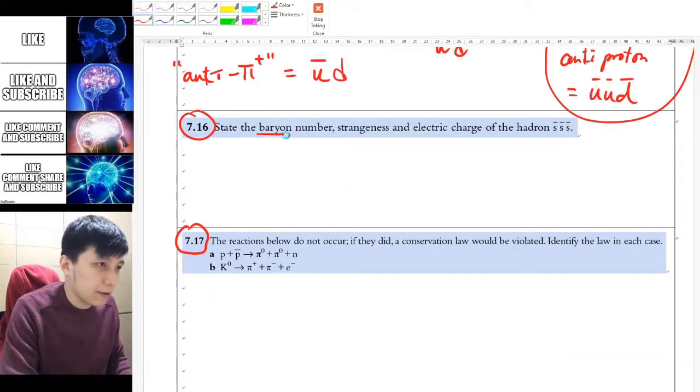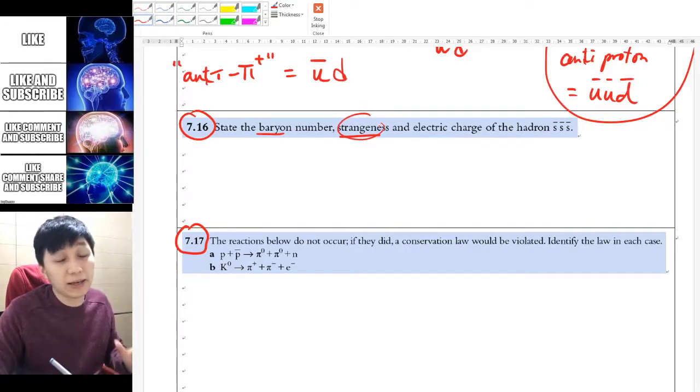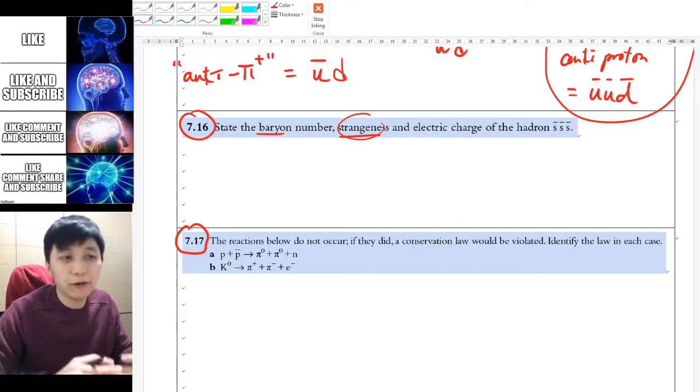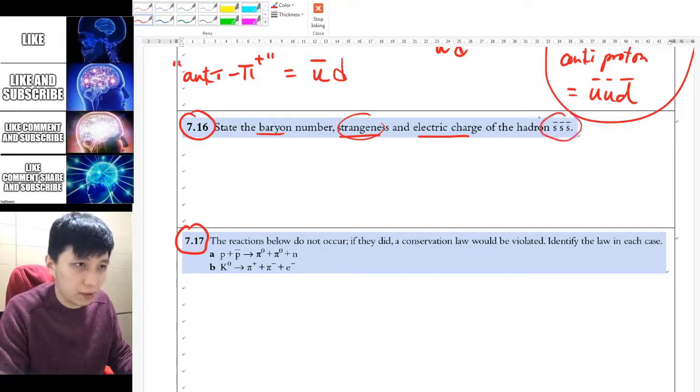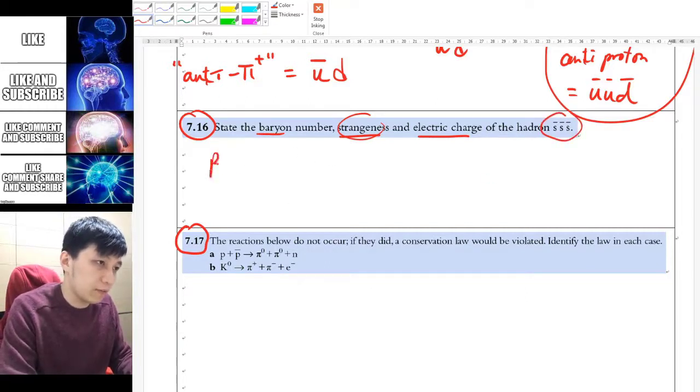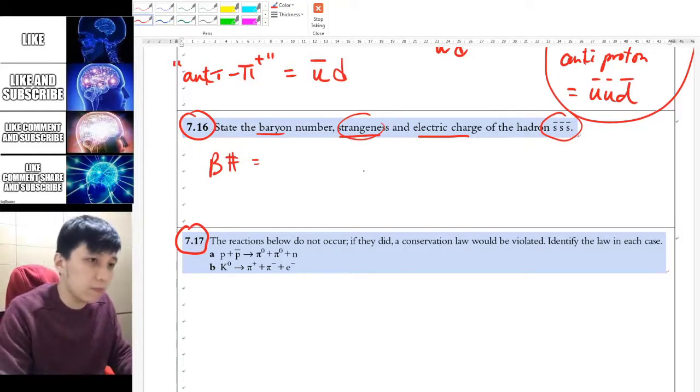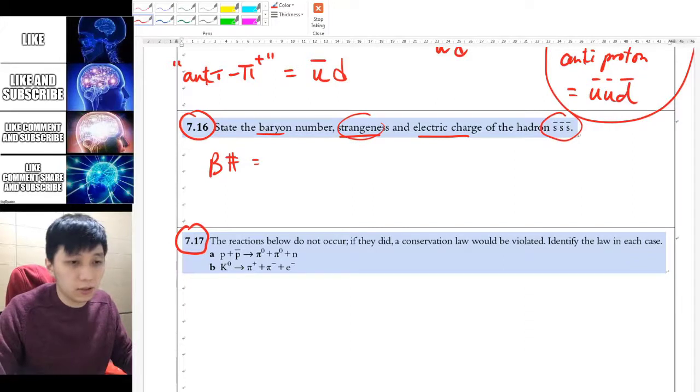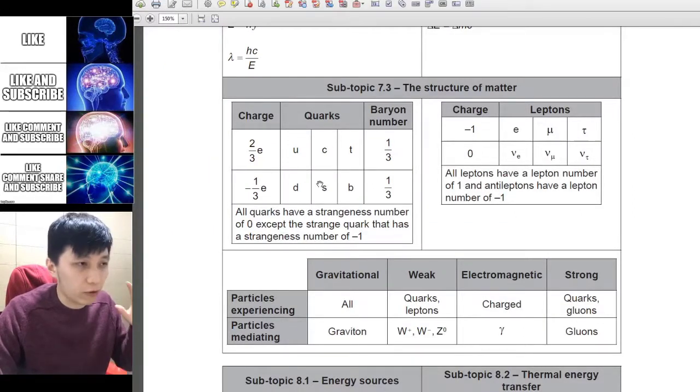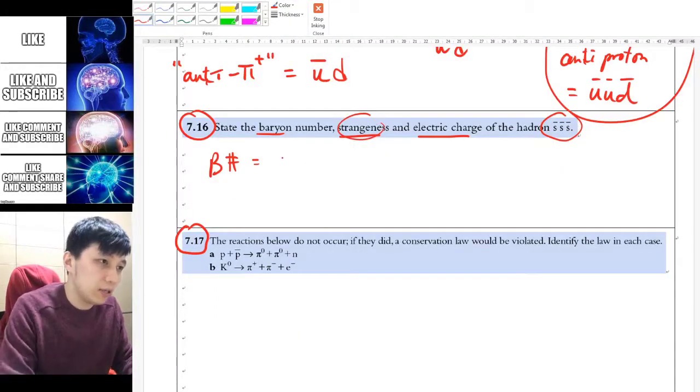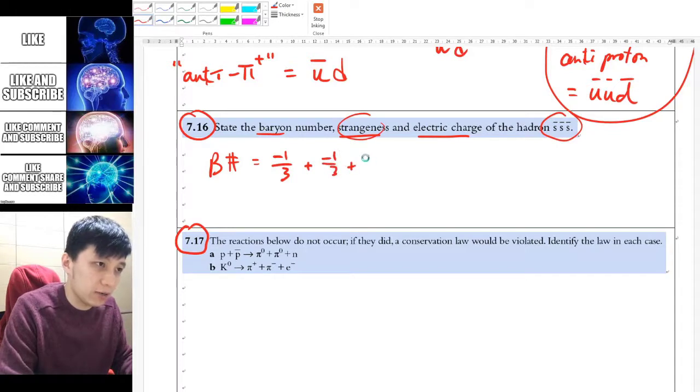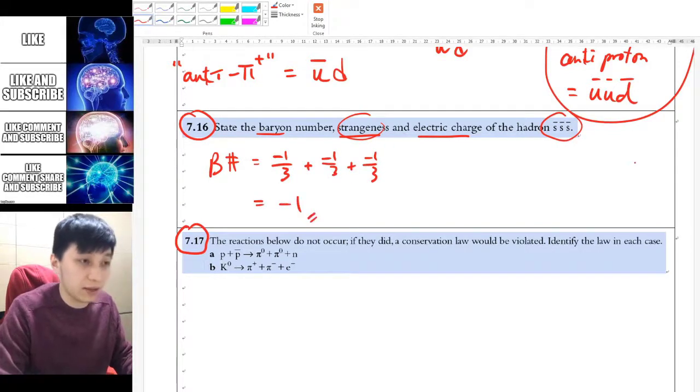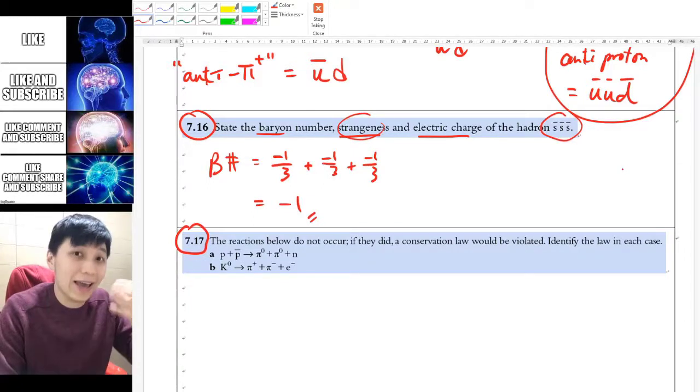Next, it asks you to find the baryon number, strangeness, and charge number for this hadron. For the baryon number—let me write in this notation, but don't write it in the exam—these are all anti-quarks. If you don't remember, you can check: regular quarks carry positive 1/3. For these, each of these carries negative 1/3 because these are anti-quarks. So having all three act together gives negative 1. Obviously this is an anti-baryon.